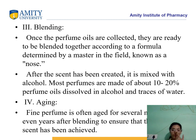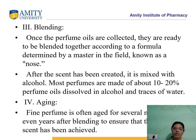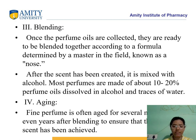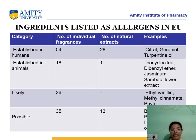The third manufacturing step is blending. Once the perfume oils are collected, they are blended together according to a formula determined by a master perfumer — known as a 'nose.' After the scent has been created, it is mixed with alcohol; most perfumes are made of about 10–20% perfume oil dissolved in alcohol with approximately 2% water. The fourth step is aging, where fine perfumes are often aged for several months or even years to ensure that the blending has developed properly and the desired scent is achieved.